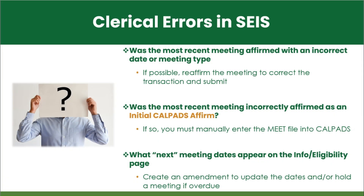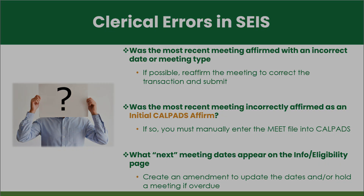Clerical errors in SACE may result in overdue or late meetings. Examine the information eligibility page on the IEP for clerical errors regarding meeting dates and next meeting dates. The meeting notes page can also determine what meeting type should have been affirmed. Current IEPs affirmed yes for initial CALPADS affirmed will not have the Meet file created.